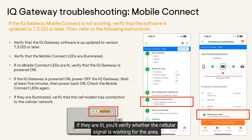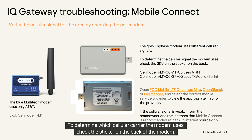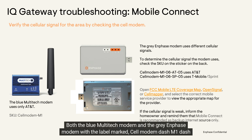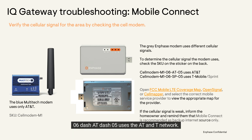If the LEDs are lit, verify whether the cellular signal is working for the area. To determine which cellular carrier the modem uses, check the sticker on the back of the modem. Both the blue Multi-Tech modem and the gray Enphase modem with the label marked Cell Modem dash N1-06-AT-05 use the AT&T network.